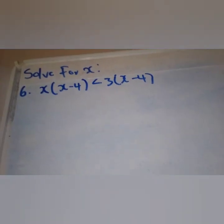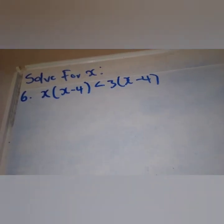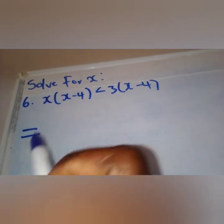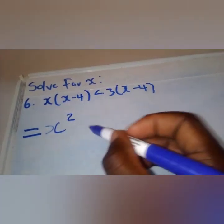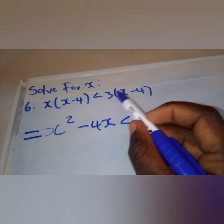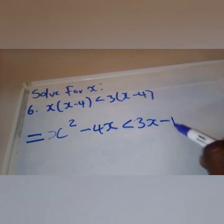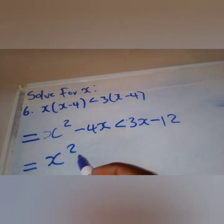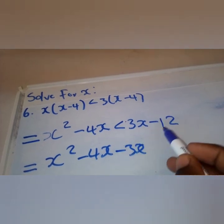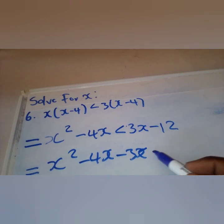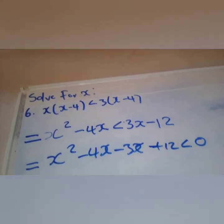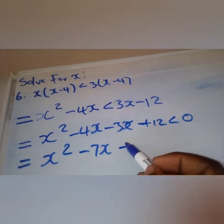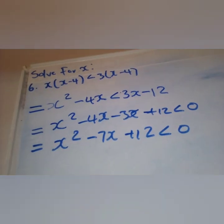The next example requires us to get rid of the brackets first to put everything in standard form. We multiply out: x times x gives x squared, and expanding gives 3x minus 12. We then group like terms: x squared minus 4x, then transpose 3x and 12, giving x squared minus 7x plus 12 less than zero.